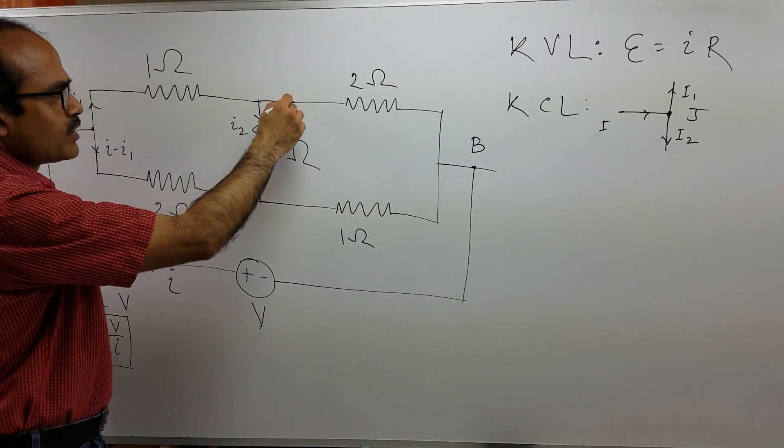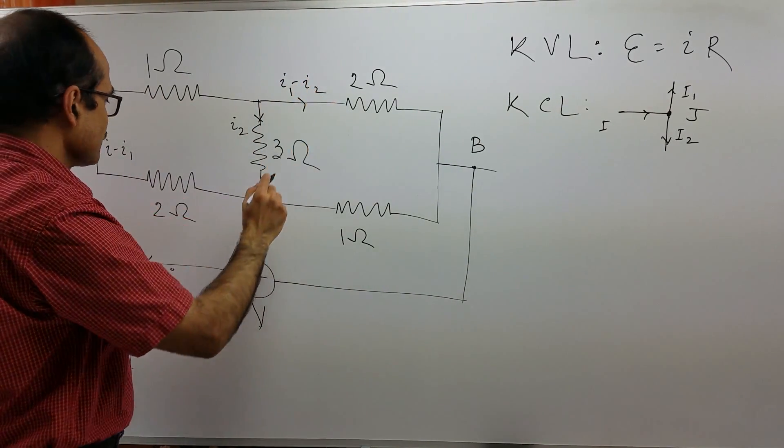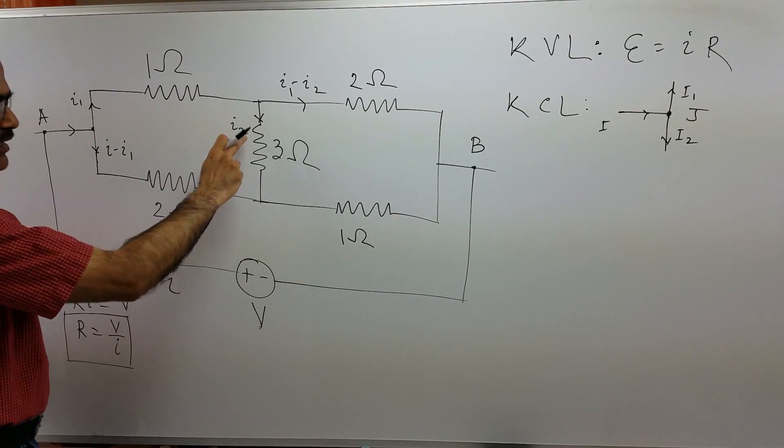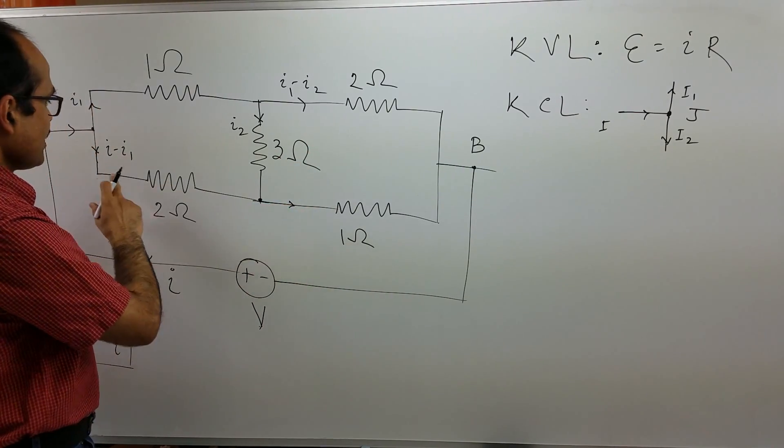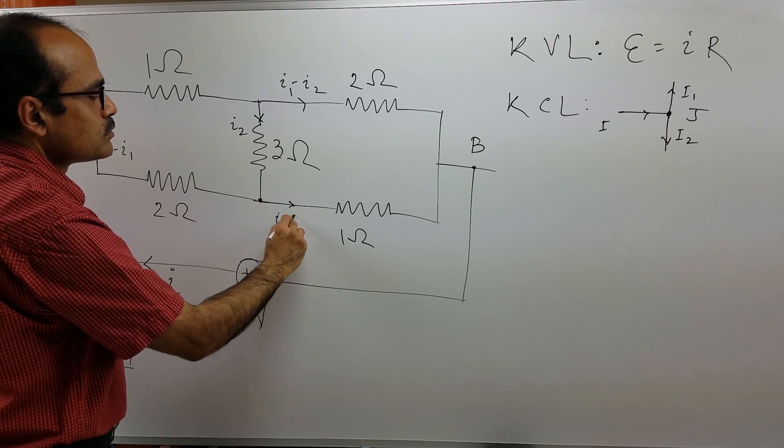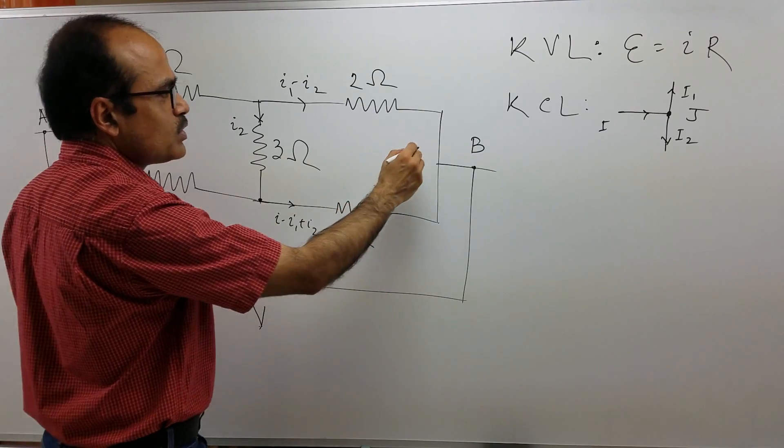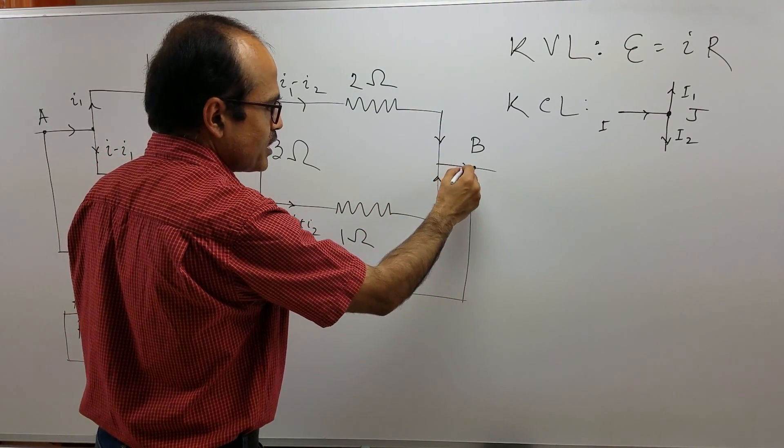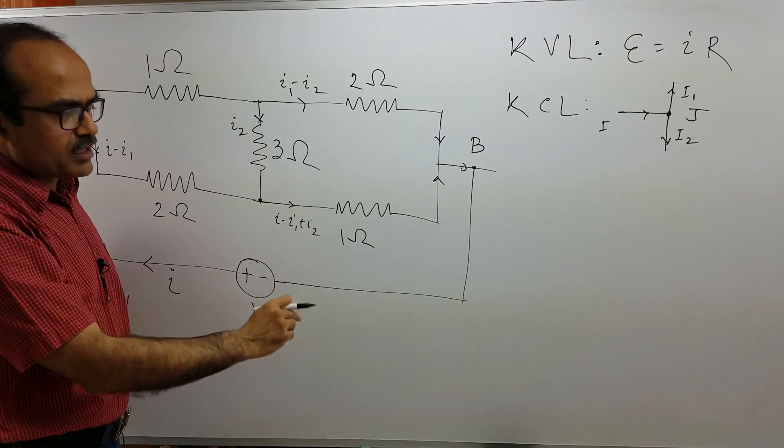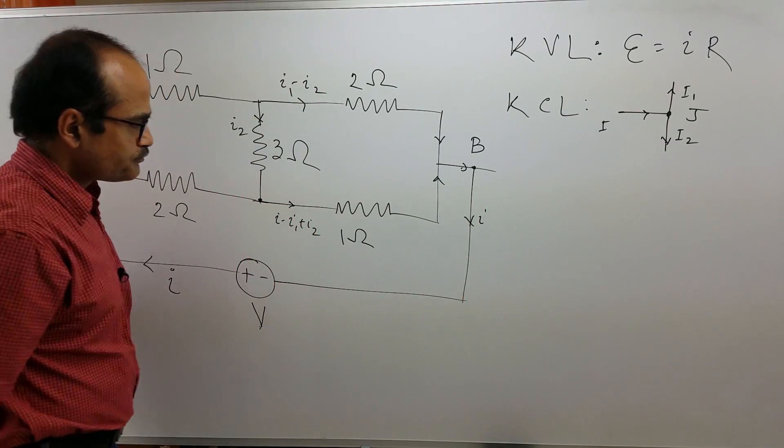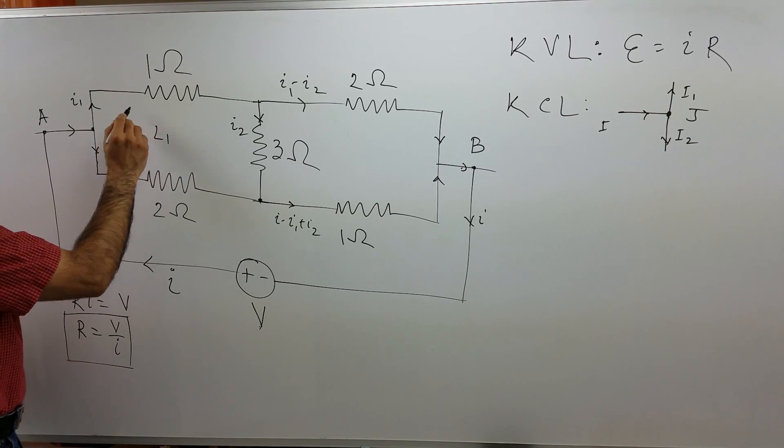Now, again using KCL, current here is I1 minus I2 and this I1, I minus I1, and this I and this I2 are added up here and coming out as I. So I minus I1 plus I2 plus I1 minus I2 is equal to I.